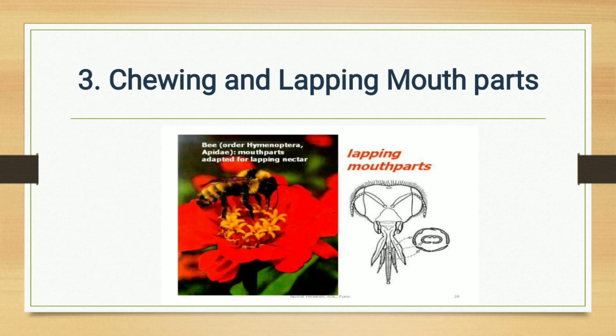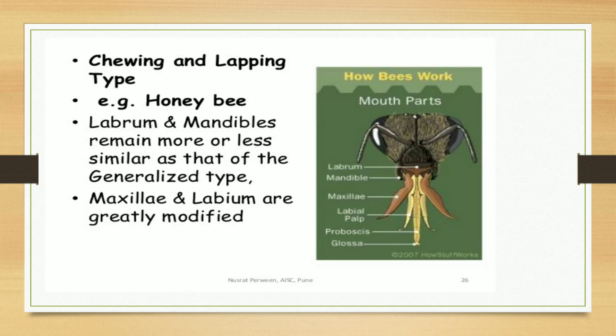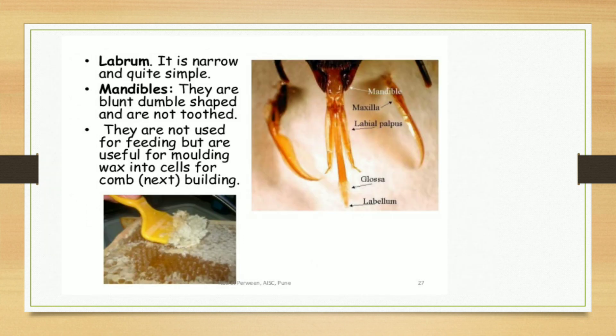Let us see the next type of mouthpart: chewing and lapping mouthpart. It is present in honeybee. Labrum and mandibles remain more or less similar as that of generalized type of mouthparts. Maxillae and labium are greatly modified.